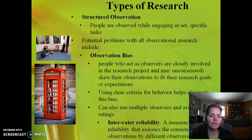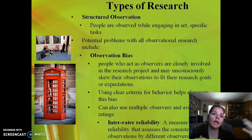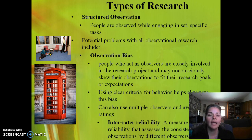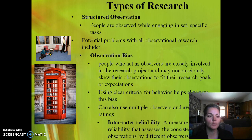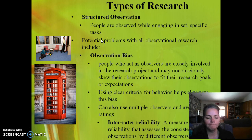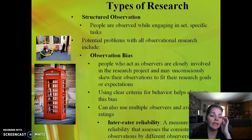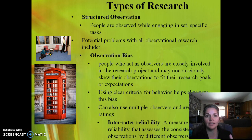Structured observation is a bit different. It has some elements of naturalistic observation but also lab elements. You set up a structured situation for an individual — they come into that situation and you observe the behavior. They may or may not know they're being observed. The most well-known example is Mary Ainsworth's Strange Situation, where she wanted to observe the interactions between mother and child. They came into a playroom, played with toys, mom got up and left the room, and researchers observed the child's response. Mom returned and they observed again. A stranger also entered the room at one point. The goal was to understand the attachment dynamic between mother and child — whether it's secure or insecure, and what type of insecure attachment it might be.